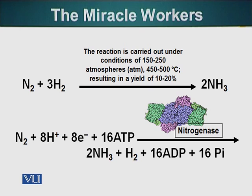This reaction occurs in nature also. Combining nitrogen with hydrogen happens in the roots of certain plants. These plants have a special type of bacteria that make a remarkable compound called nitrogenase. This nitrogenase enzyme can perform the same reaction at ambient temperature — whatever the temperature is outside — it can take a molecule of nitrogen, combine it with hydrogen, and produce ammonia.